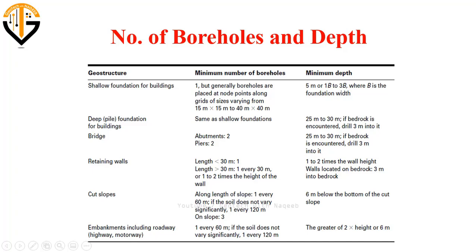The minimum depth for retaining walls should be one to two times the wall height. If bedrock is encountered, drilling should penetrate up to 3 m. For cut slopes, one minimum borehole is required for every 60 m of length along the slope.